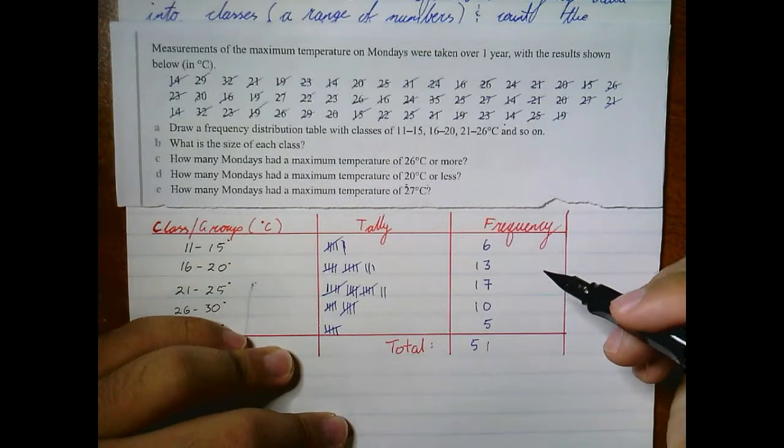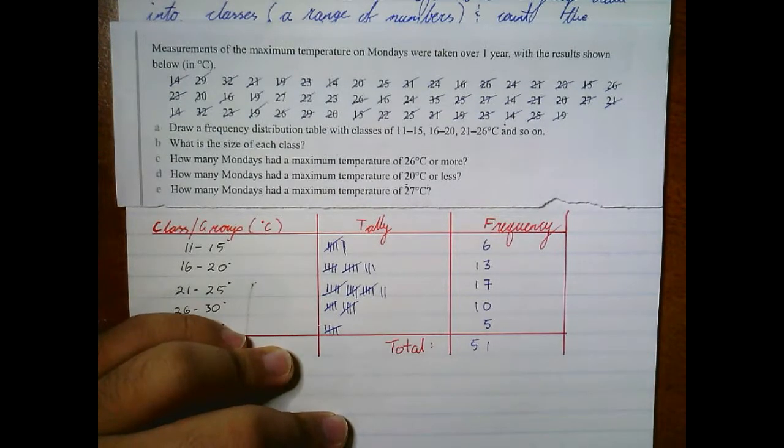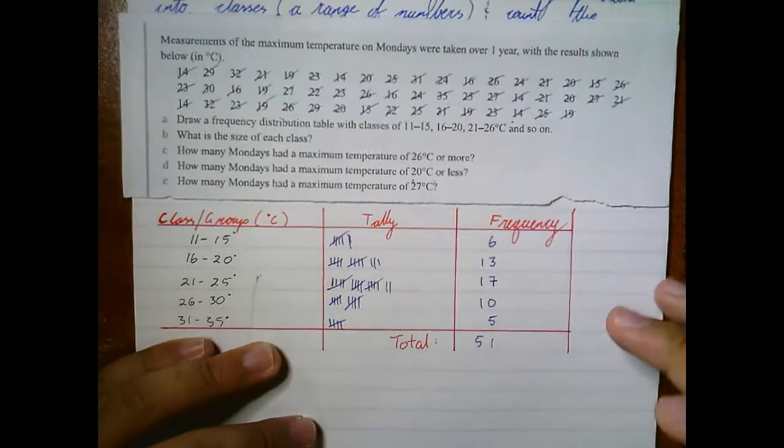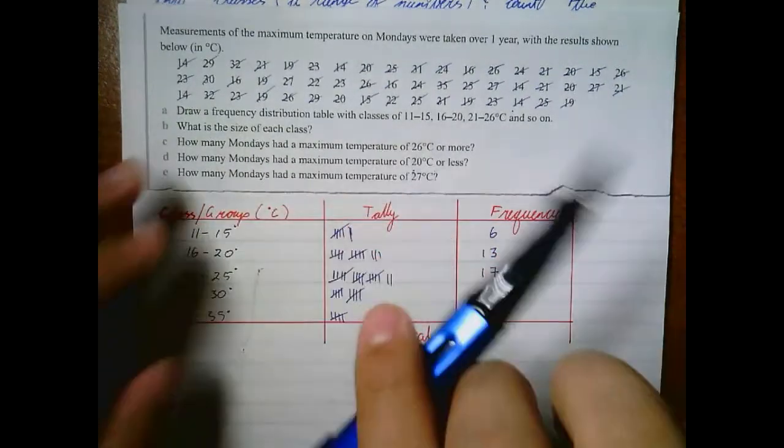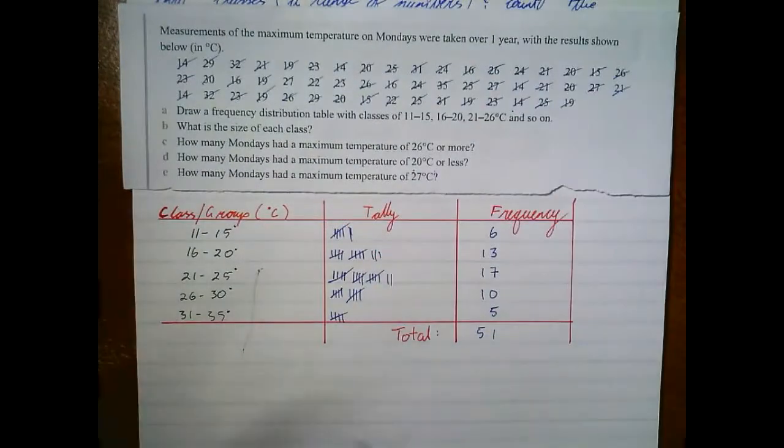So we should have 51 here. Now they're asking us, what is the size of each class? We'll answer these questions here.